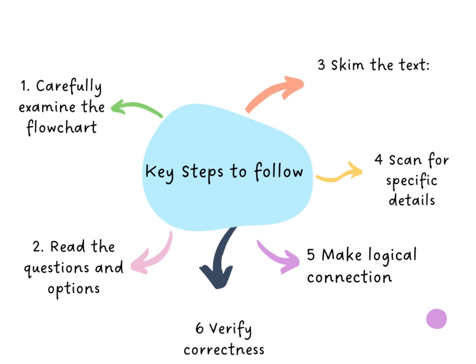Thirdly, skim the reading passage related to the flowchart to get an overview of the information. Look for keywords or phrases that match the missing information in the flowchart. When you skim the text, you also need to scan for specific details — that takes us to step four. Go back to the flowchart and scan the passage more thoroughly to locate the specific details required to complete the missing information. Pay attention to any specific dates, numbers, or related vocabulary.